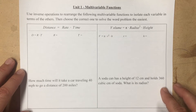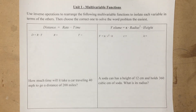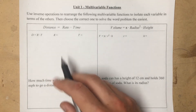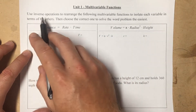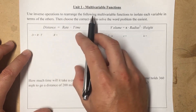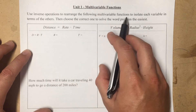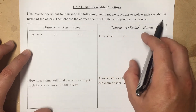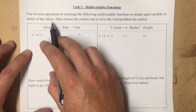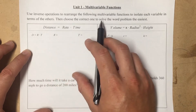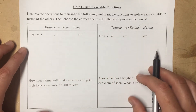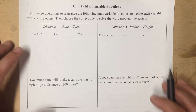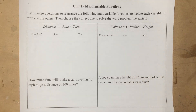This page should be in the link, so you should be able to follow along as I take these notes. The instructions say: use inverse operations to rearrange the following multivariable functions to isolate each variable in terms of the others. Then choose the correct one to solve the word problem the easiest. It'll be a lot easier as we take a look at examples.